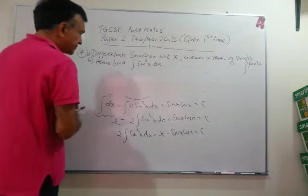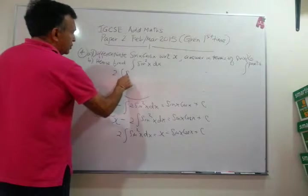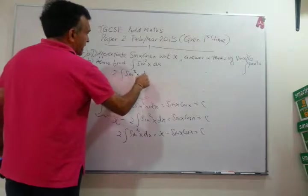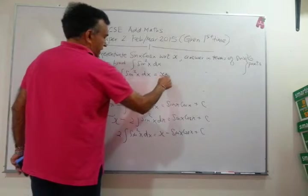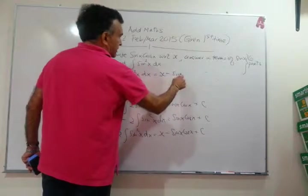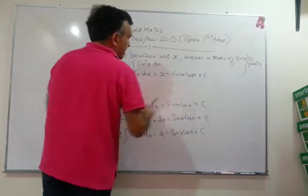Let me write the whole thing here again. So, I have 2 times the integral of sine squared x dx equals x minus sin x cos x plus x plus c.